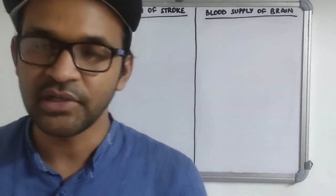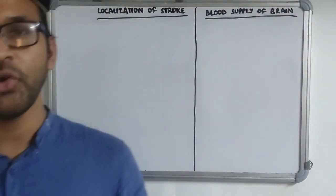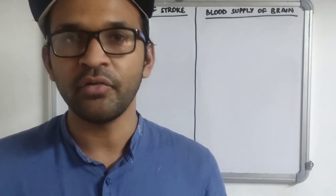Today we'll discuss the localization of stroke. Before we go on, we need to know about the blood supply of the brain. The brain is primarily supplied by three major arteries: the anterior cerebral artery, the middle cerebral artery, and the posterior cerebral artery. We'll look at the territory of each of these arteries.